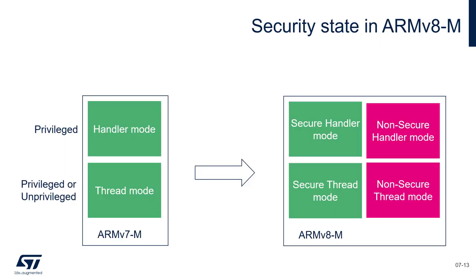On the left we see the ARMv7 architecture that we have currently on all other STM32 except L5. The core can run in two levels of privilege. Handler mode means the core is running inside an interrupt service routine or running an exception. Thread mode is the ARM term for running the background task. Exceptions or interrupts are always run with elevated privileges. Thread mode can be either privileged or unprivileged depending on the software design. In ARMv8, we add an extra security state which is orthogonal, so we can have all four combinations of privilege levels and security states.